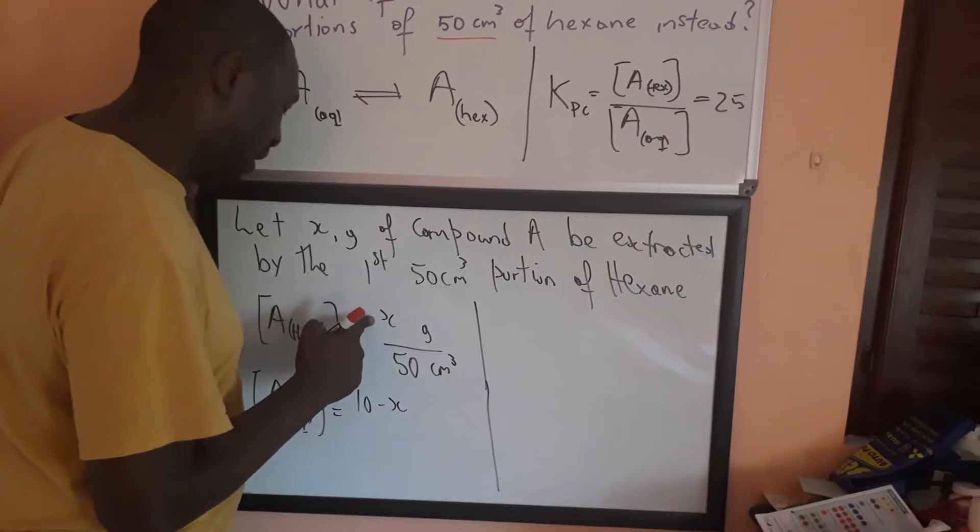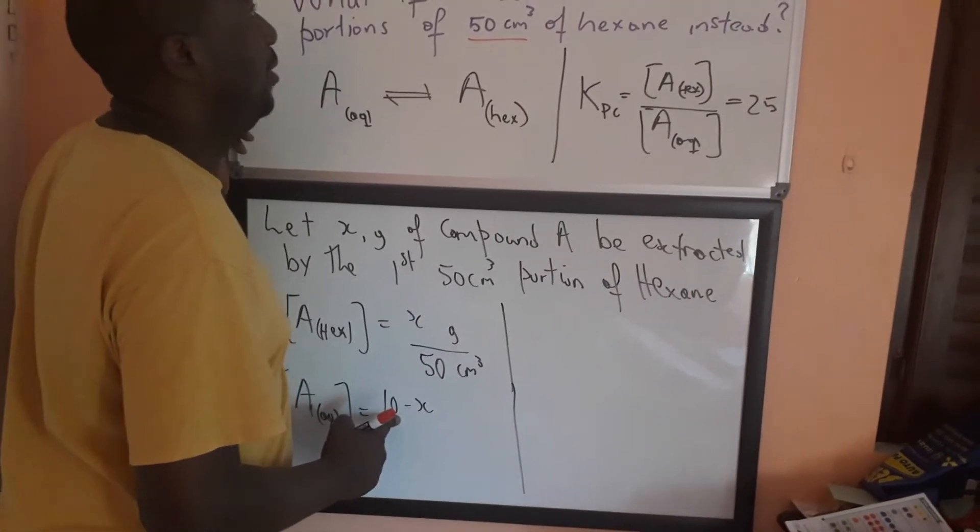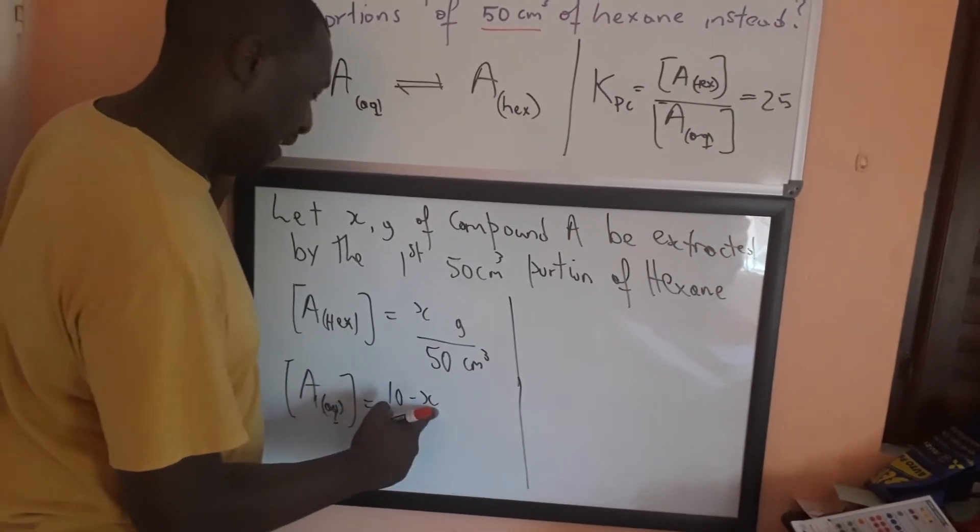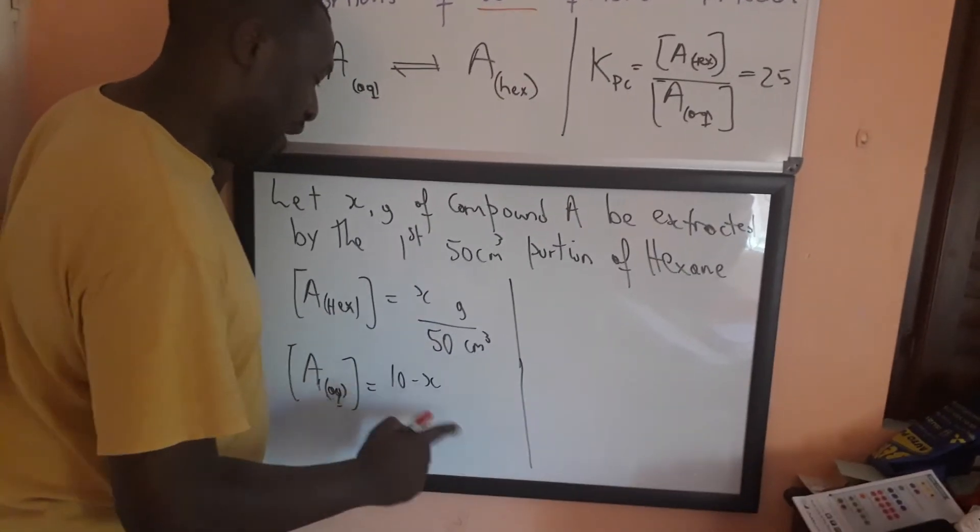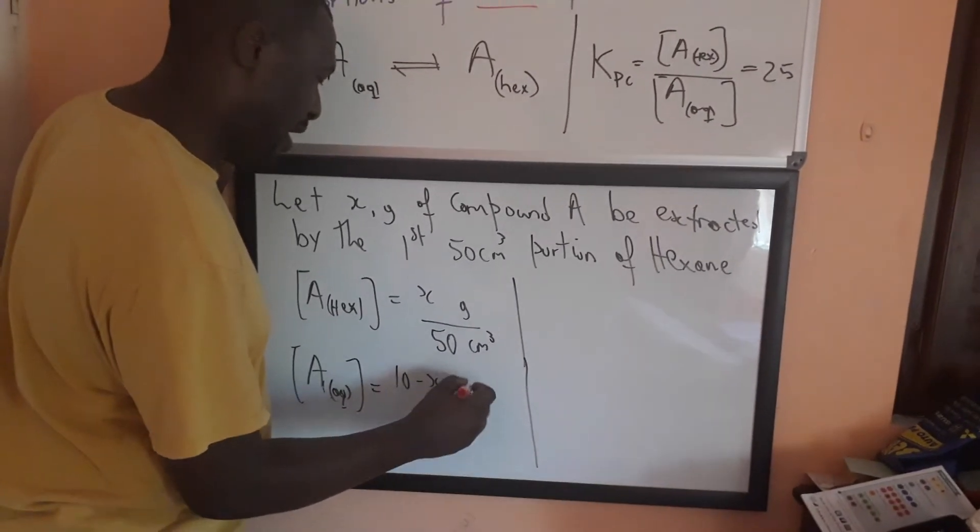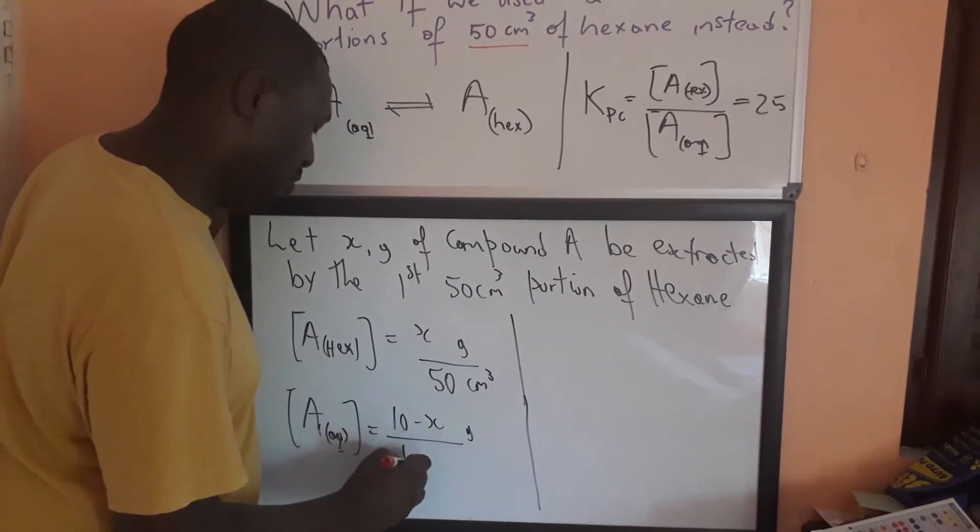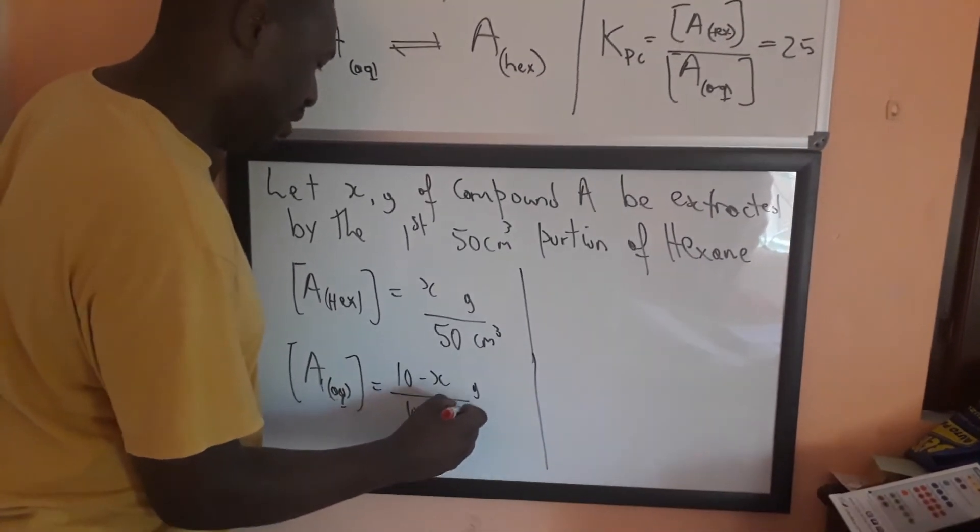And, the concentration of A in water would be what was left in the water after extraction. Remember, X is extracted, so we start with 10 in the water, and X is extracted, so after extraction at equilibrium, we have 10 minus X grams remaining, and the volume was 1,000 cm³.